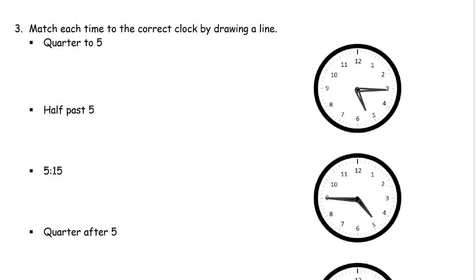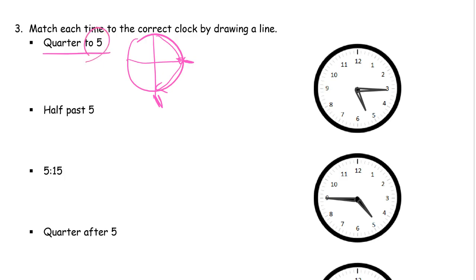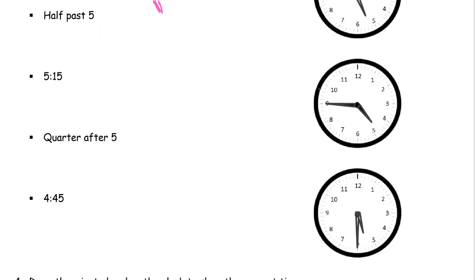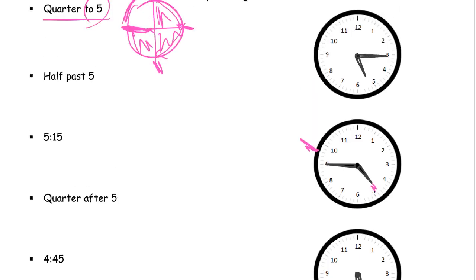Match each time to the correct clock by drawing a line. Quarter to five — think about that clock face. If it was five o'clock, the minute hand would go here — that's the first quarter, then the second quarter, so that may be half past, this one here would be quarter past, that's half past. But quarter to five means it's not five yet, it's still four, but it's only one quarter left until five. So the minute hand has gone here and there and there, but it hasn't gone all the way around yet — we want this one.